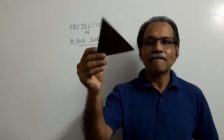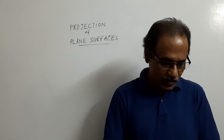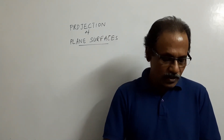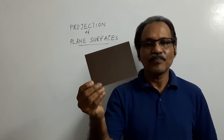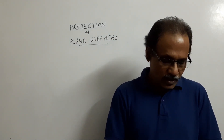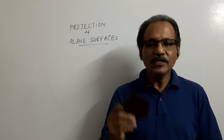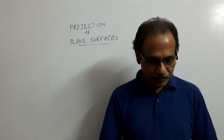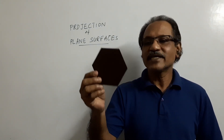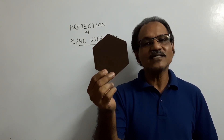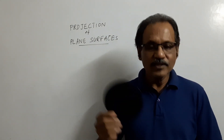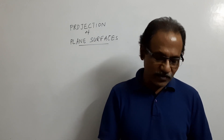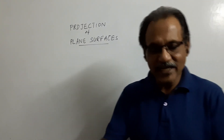This is an equilateral triangular lamina. This is a square lamina — a very thin square lamina. This is a rectangular lamina. This is a pentagonal lamina with included angle 108 degrees — a regular pentagon. This is a hexagonal lamina with included angle 120 degrees — a regular hexagon. This is a circular lamina. These surfaces, referred to as laminas, can be kept in space in various positions.